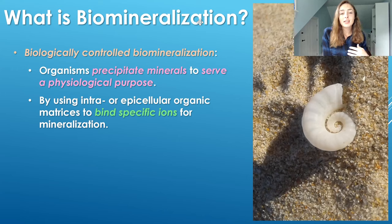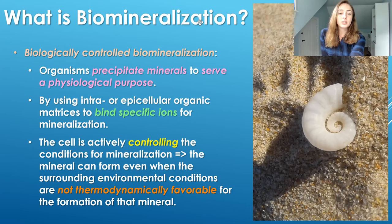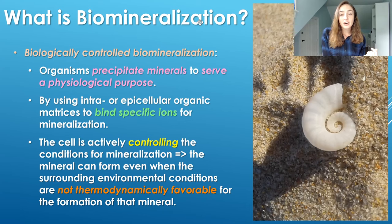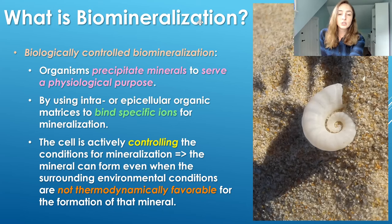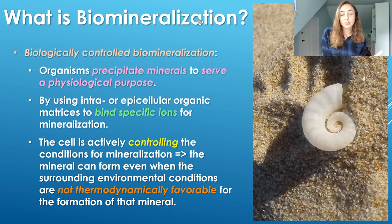The exact role that they're playing is by using their intra or epicellular organic matrices to bind specific ions for mineralization. In this case, the cell is actively controlling the conditions for mineralization. Therefore, the mineral can form even though the surrounding environment might not have conditions thermodynamically favorable for that mineral to form if it had been an abiotic process. So the microbe or bacteria or whatever organism is controlling the biomineralization of this mineral is necessary for the mineralization to take place. It's not only catalyzing the process — it's creating a microenvironment thermodynamically favorable for that mineral to form, and once it is formed, it is using that mineral for some physiological purpose.